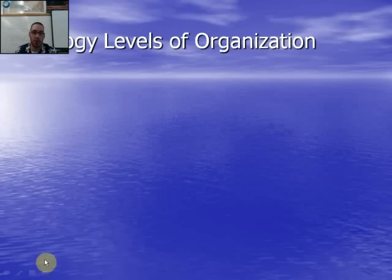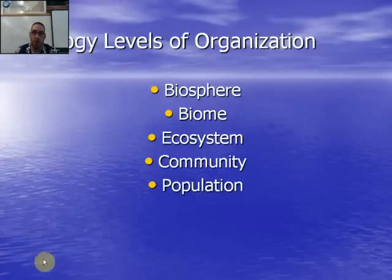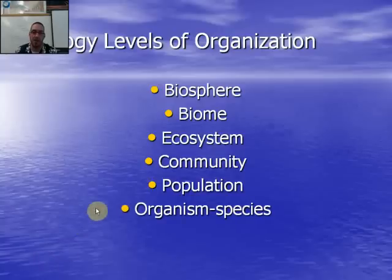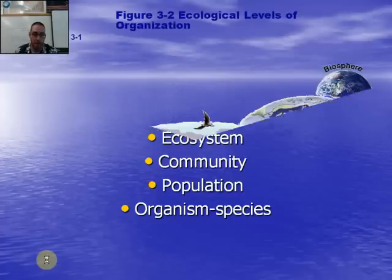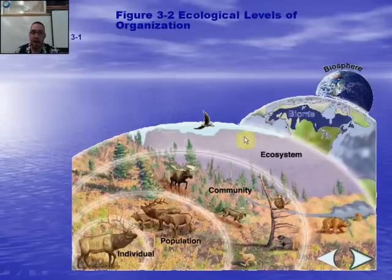Now, the levels of organization we use in ecology, from largest to smallest: biosphere, biome, ecosystem, community, population, and organism or species. Each one builds up toward the largest, which is the biosphere. Quickly: individual — we can study a single species; population — a group in a defined area; community — all the biotic living factors; ecosystem — biotic and abiotic factors together; biome — like the tundra; and biosphere — all the living parts of our planet.